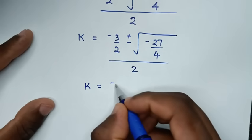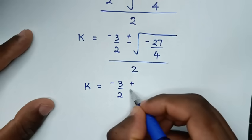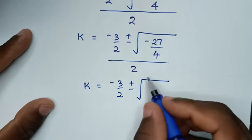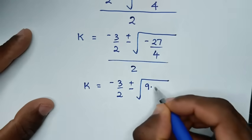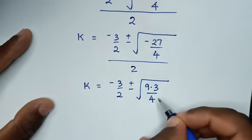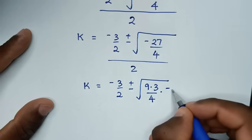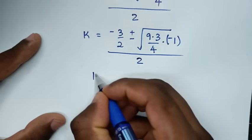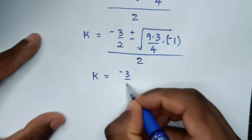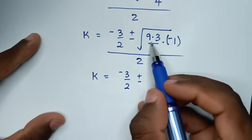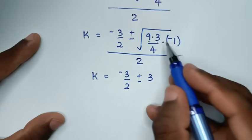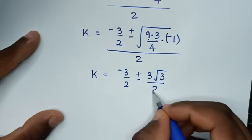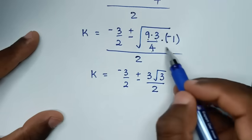So k equals negative 3 over 2 plus or minus the square root of negative 27 over 4. Negative 27 over 4 is the same as 9 times 3 over 4 times negative 1. Taking the square root: square root of 9 is 3, times square root of 3, over square root of 4 which is 2, and the square root of negative 1 is i. All of this over 2.